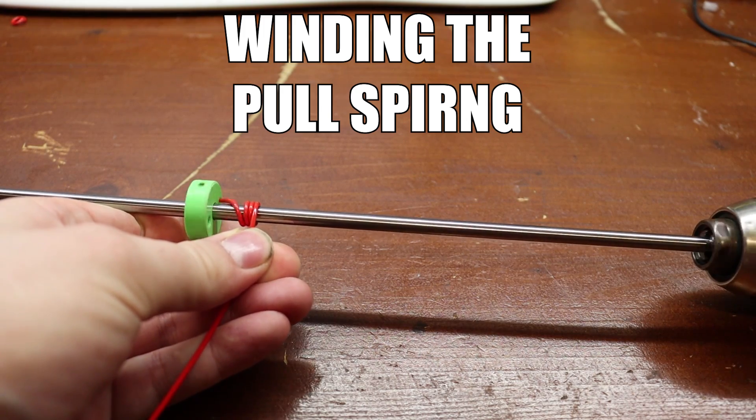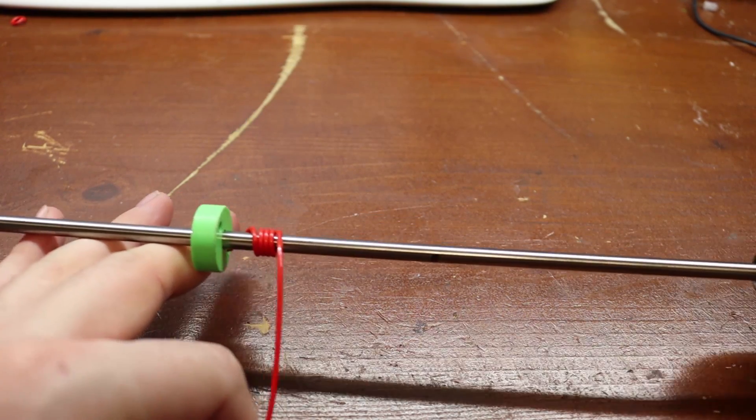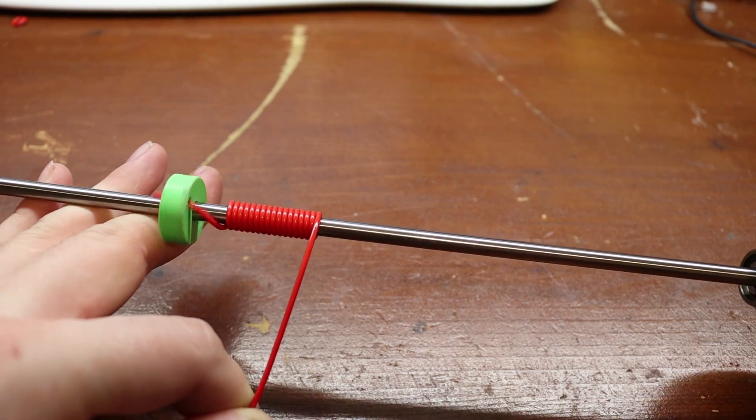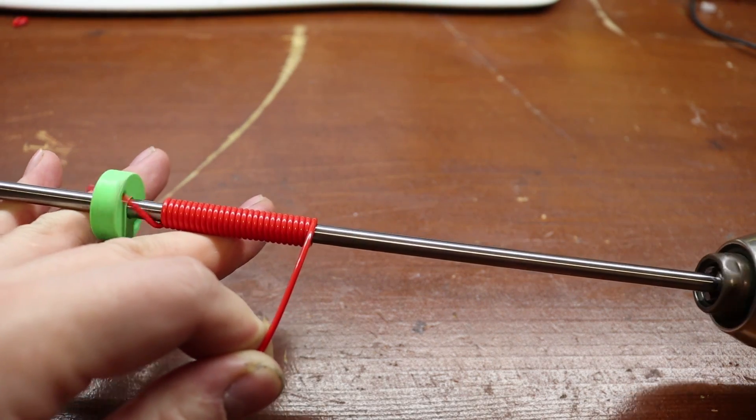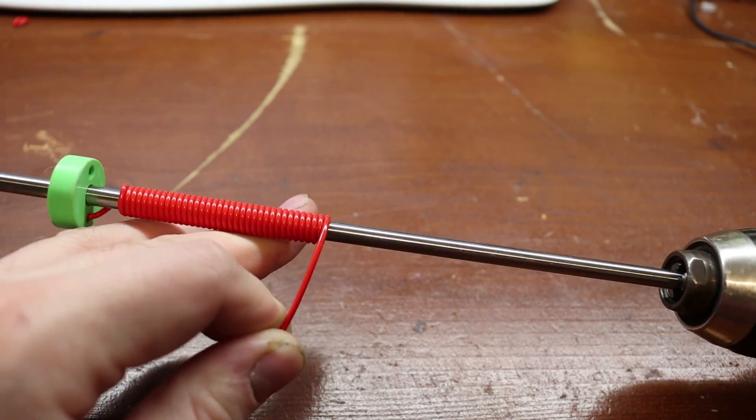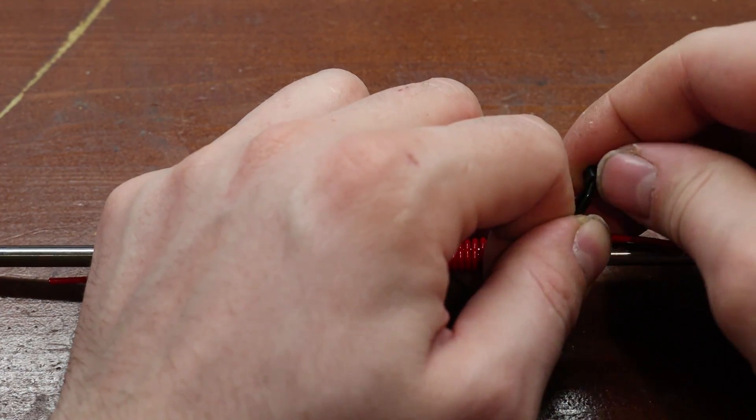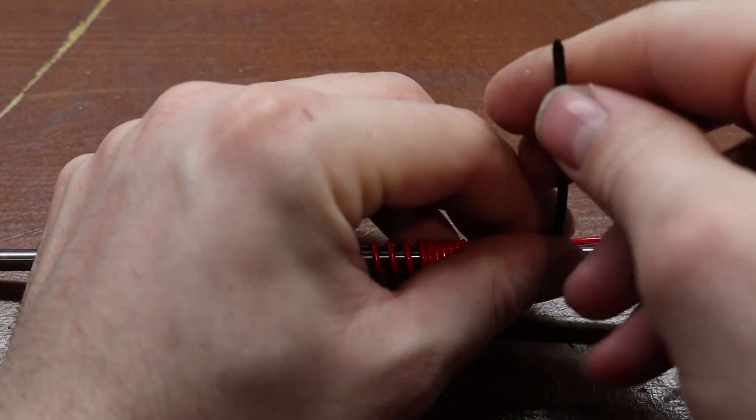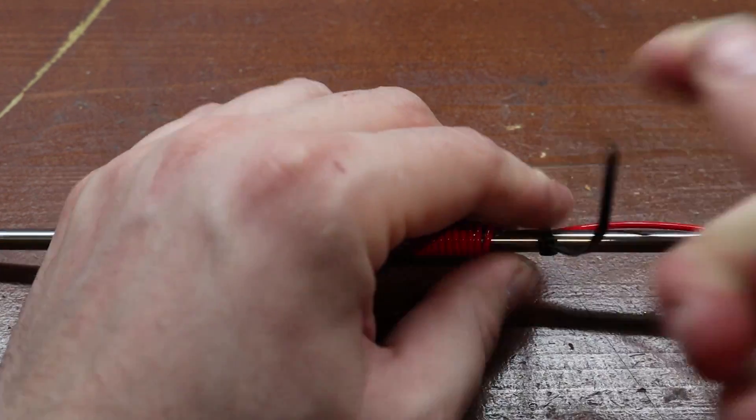For a pull spring you just add two instead of four marks on the axle, and then you keep on rolling with all the windings touching each other. This is basically how you make the pull spring. When you are done rolling the spring you need to fix the ends in place, and you do this by adding two zip ties.